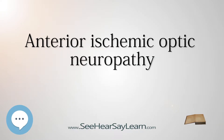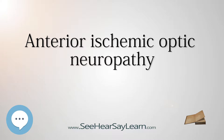Anterior ischemic optic neuropathy is a medical condition involving loss of vision caused by damage to the optic nerve as a result of insufficient blood supply, or ischemia. This form of ischemic optic neuropathy is generally divided into two types: arteritic AION, where the loss of vision is an effect of an inflammatory disease of arteries in the head called temporal arteritis,